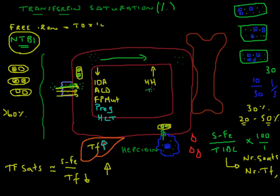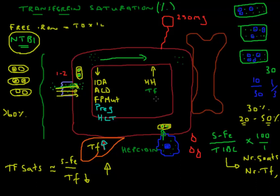Transfusion-related iron overload also leads to high transferrin saturation. Each unit of blood contains 250 milligrams of iron — quite a lot when you consider that normally only one to two milligrams are absorbed per day. Examples include patients who are chronically transfusion dependent, such as those with aplastic anemia.